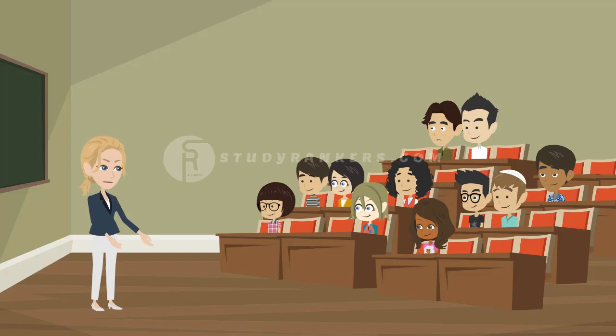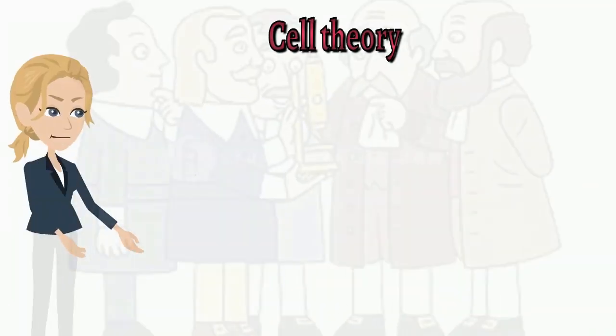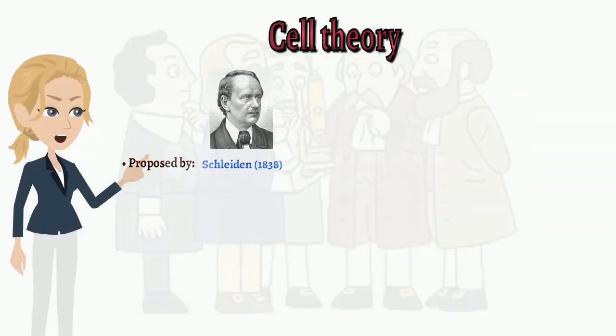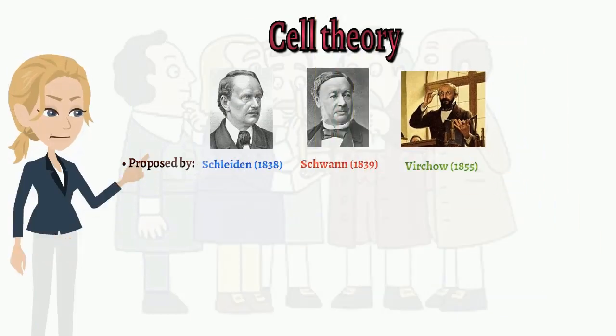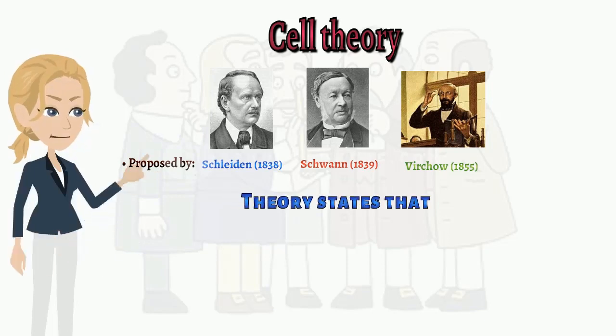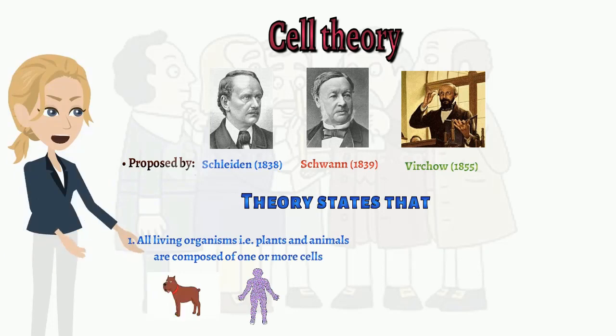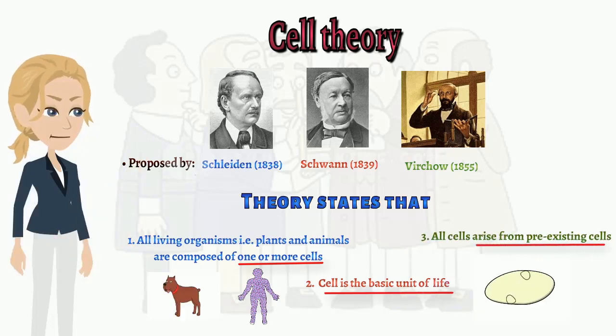Now, the next topic is cell theory. Cell theory proposed by Schleiden in 1838 and Schwann in 1839, Virchow in 1855 made further addition to the theory. The theory states that all living organisms, that is plants and animals, are composed of one or more cells. Cell is the basic unit of life. All cells arise from pre-existing cells.